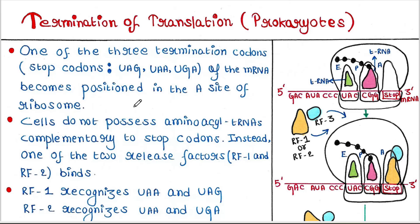Translation consists of three phases: initiation, elongation, and termination. In our previous lectures we have talked about initiation and elongation. If you missed those lectures, I would highly recommend you to go through them in order to understand today's lecture in a better way. Today we will talk about the termination part.